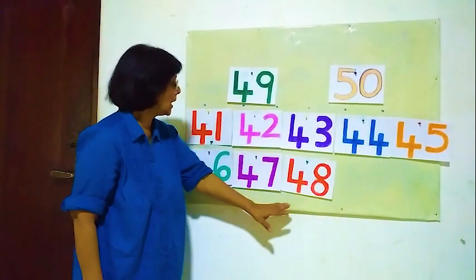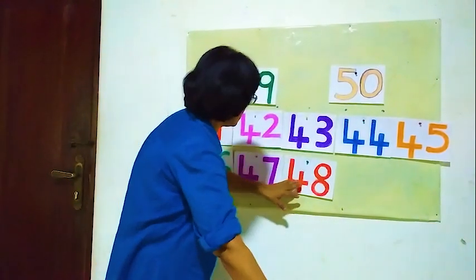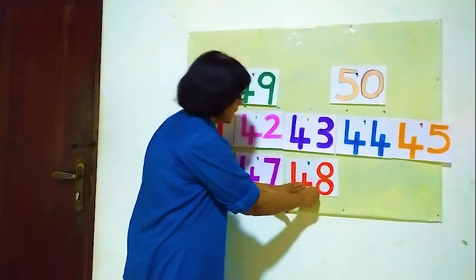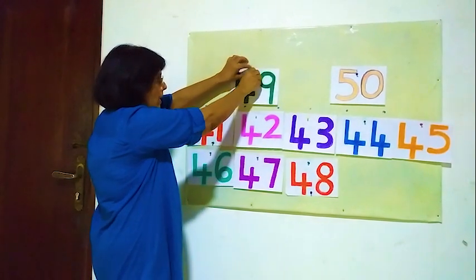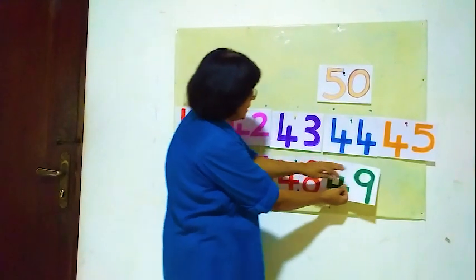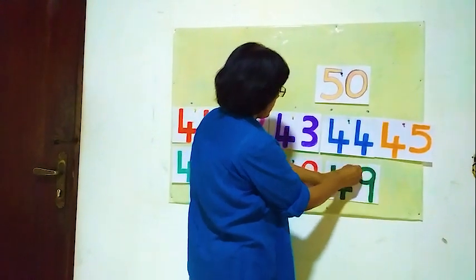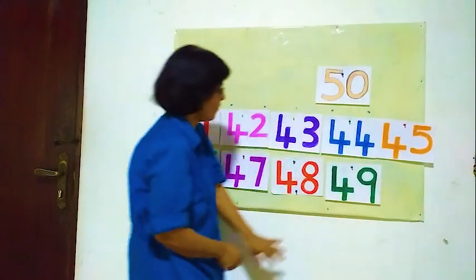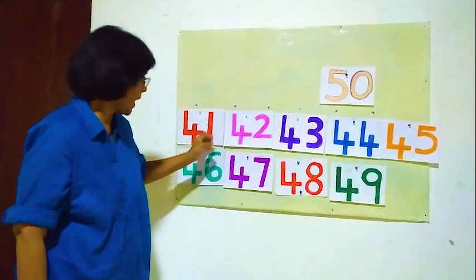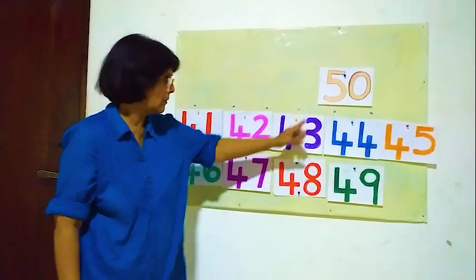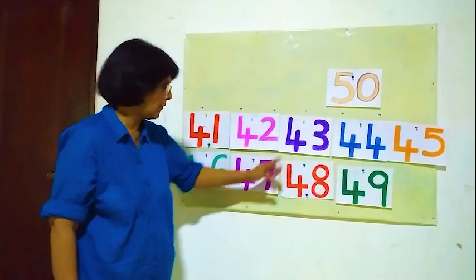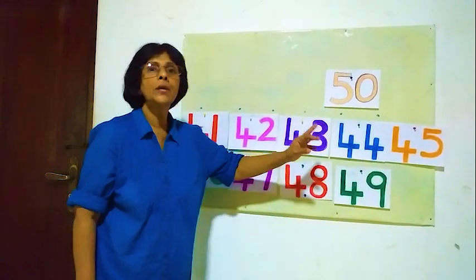After 48, what is the next number? 49. Here 49. Now 49. So: 41, 42, 43, 44, 45, 46, 47, 48, 49.